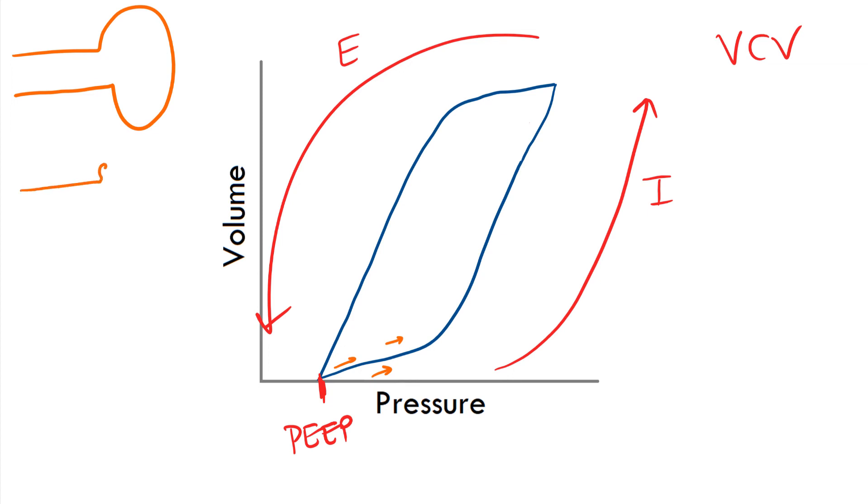You have a mixture of some deflated alveoli, maybe like that, and some completely collapsed alveoli. So, as we are increasing our pressure, we are slowly recruiting more alveoli.